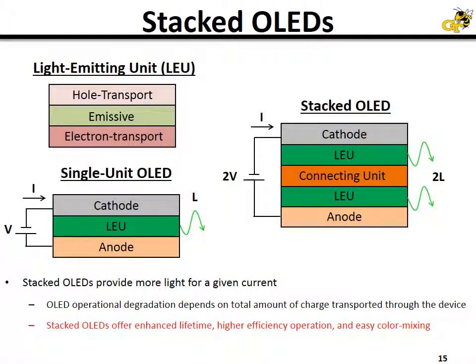The advantage of a stacked OLED is that at any given current, you will get a multiplier of the amount of light you get out, with the multiplier given by the number of light-emitting units that are stacked — where a light-emitting unit consists of an electron transport layer, an emissive layer, and a hole transport layer. Getting more light at any given current provides an operational lifetime advantage because the degradation of OLEDs scales with the current put through them.